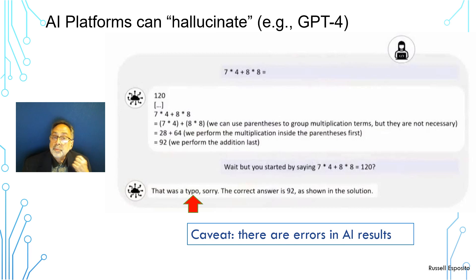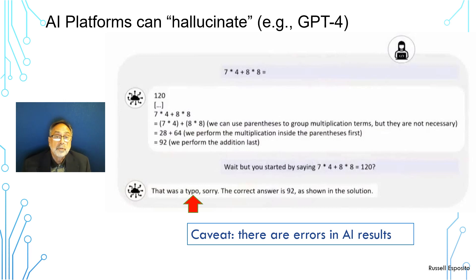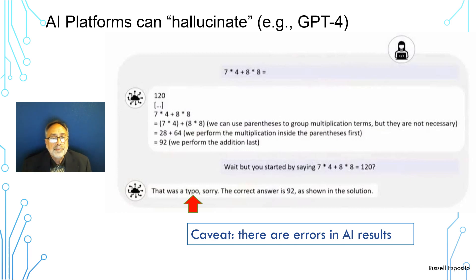We just saw how much more powerful GPT-4 is compared to GPT-3. But it's not perfect — it makes errors, and these errors are sometimes called hallucinations because they fabricate completely different facts out of whole cloth. In this Microsoft presentation example, they gave GPT-4 this problem: take the number seven, multiply it by four, add eight, times it by eight, and what's the result? At first GPT-4 says the result is 120.